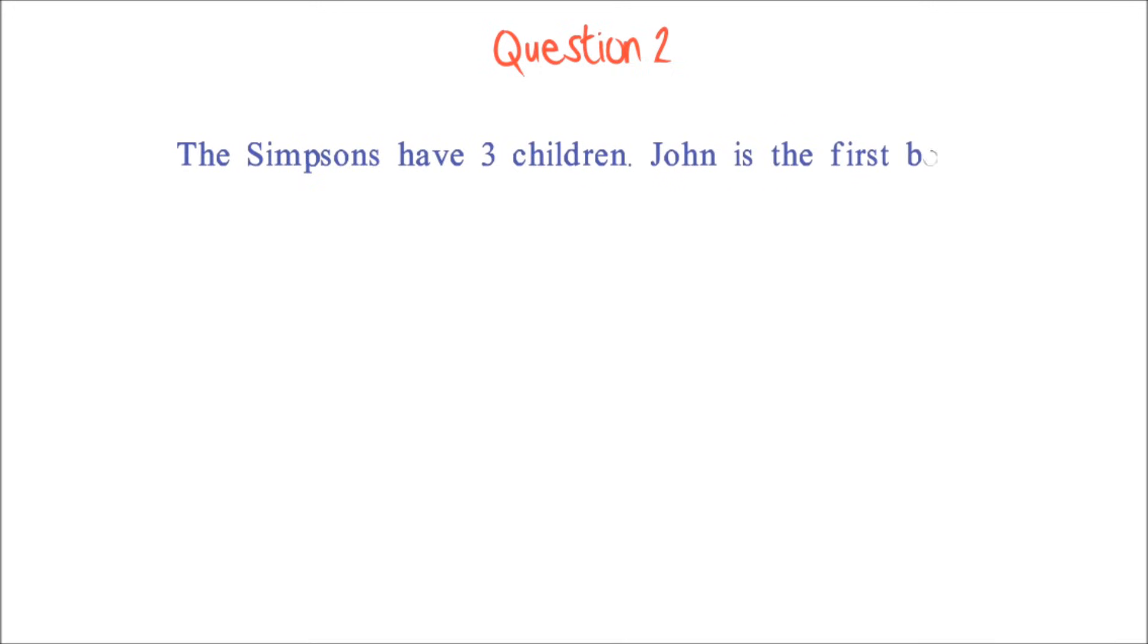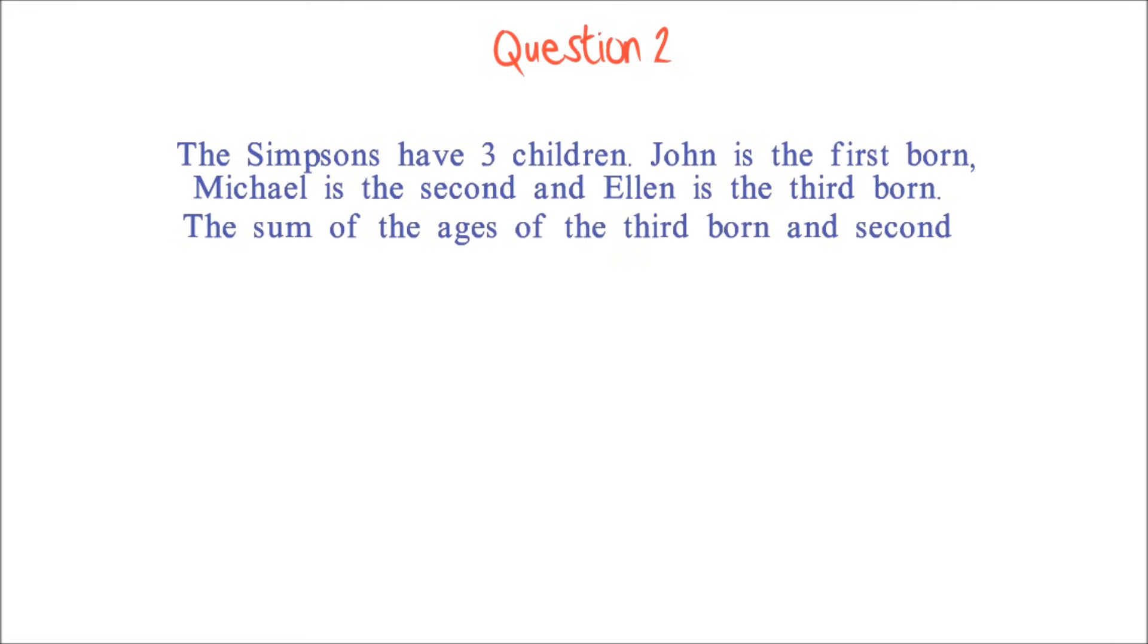Let's look at the same question and put a twist to it to make it more difficult. Question 2. The Simpsons have three children. John is the firstborn, Michael is the second, and Ellen is the thirdborn. The sum of the ages of the thirdborn and secondborn is the same as the age of the firstborn.